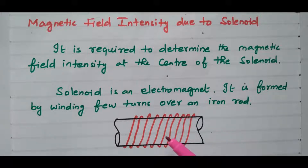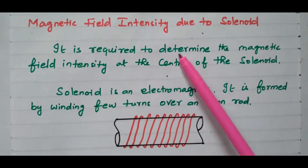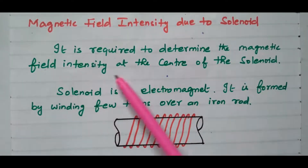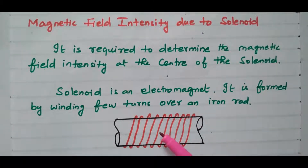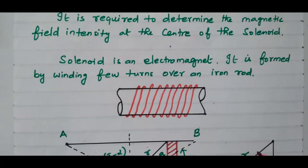Our aim is to find the magnetic field intensity at the centre of the solenoid. Now we will go to the detailed diagram.